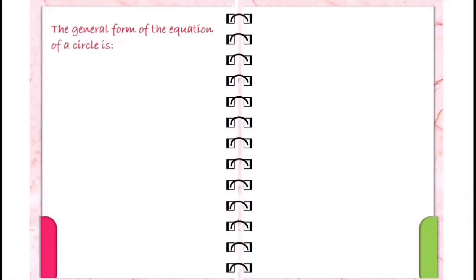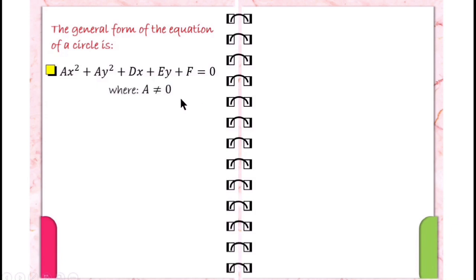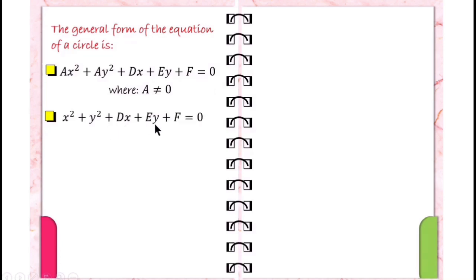The general form of the equation of a circle is ax squared plus ay squared plus dx plus ey plus f equals zero, where a should not be equal to zero. Now, if we divide each term by a, we get the other form of the equation: x squared plus y squared plus dx plus ey plus f equals zero. We eliminate the numerical coefficient in the first two terms, x squared and y squared, by dividing through by a.